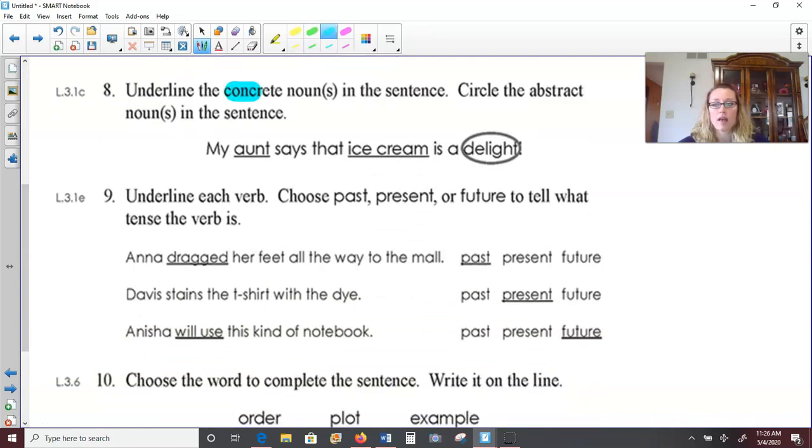Number eight, underline the concrete noun in the sentence. And then it wants us to circle the abstract noun. We did this in a lesson before. My aunt says that ice cream is a delight. Well, concrete nouns, person, place, thing. Aunt is a person and ice cream is a thing. We can both see ice cream in an aunt. The person aunt, not the little insect. So those would be concrete nouns. And then as far as the abstract noun, delight. Being a delight is a thing, but we can't actually see delight on its own. So that would be abstract.